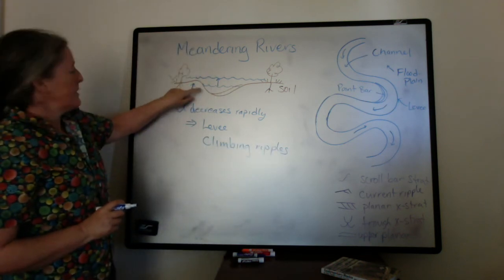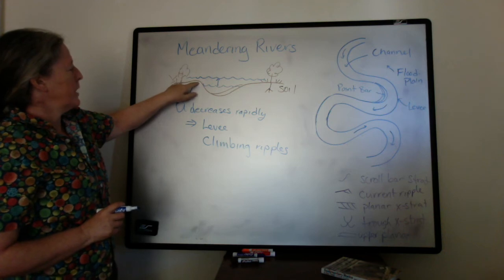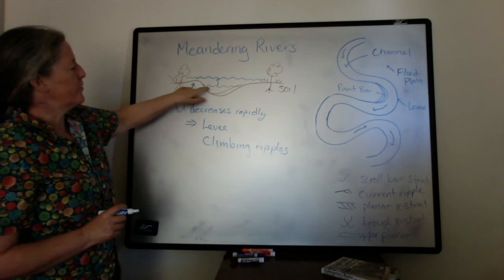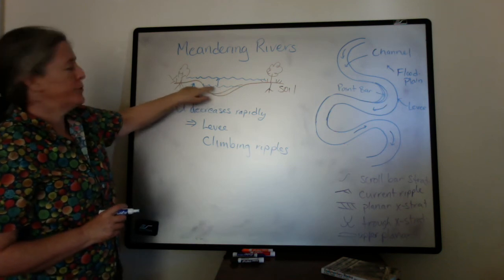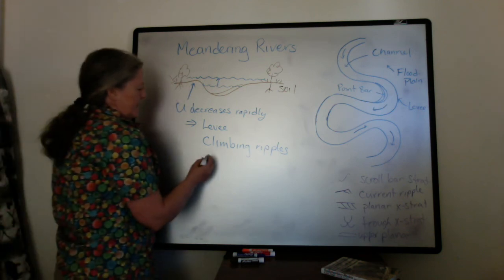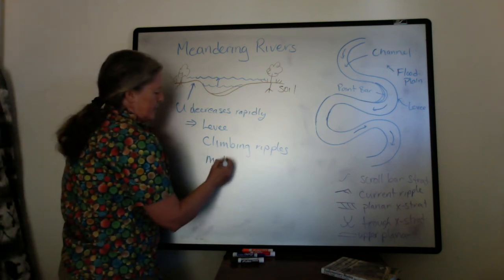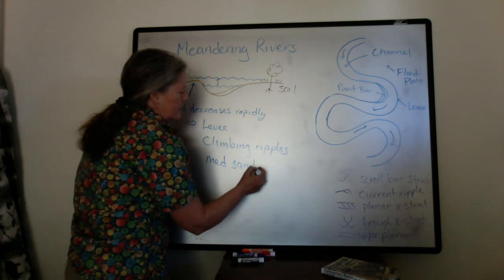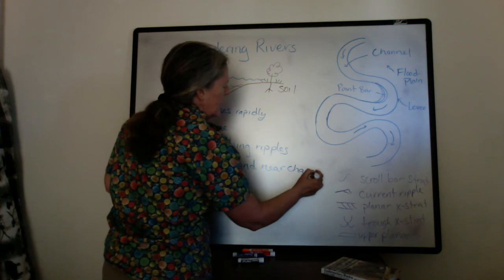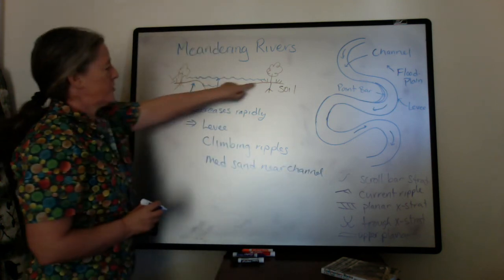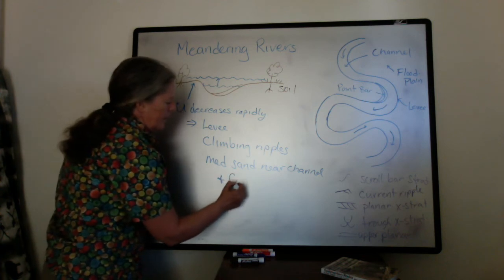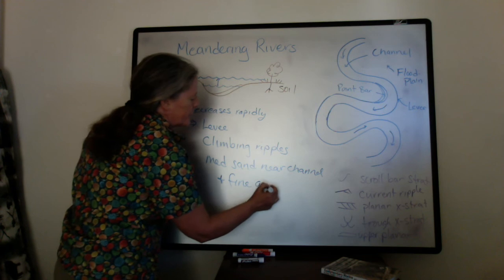The grain size is relatively low because most of the coarse sediment, even during flood time, is confined to the channel. So you typically have medium sand near the channel, and because the flow speed is slowing down the further you get away, it fines away from the channel.